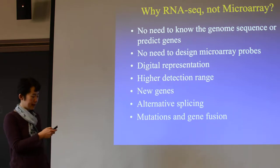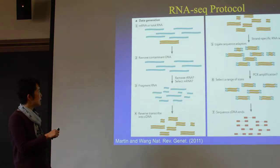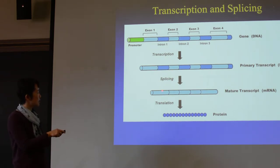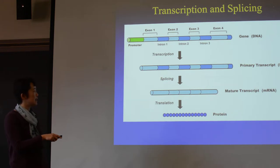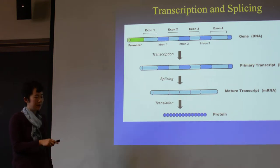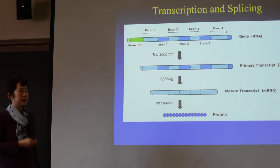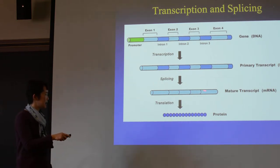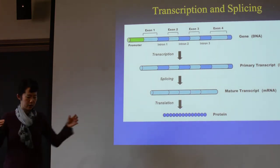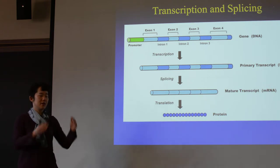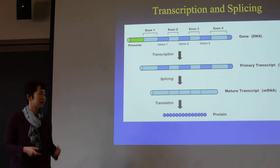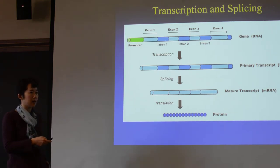You can also use RNA-seq to look at alternative splicing. For some transcripts, all the exons are used — A, B, C, D, E. But then for some genes, depending on the different tissues, organs, or drug treatment, they might select a subset of these exons to be stitched together — like A, C, D, E or A, B, E. These are alternative splicing events.